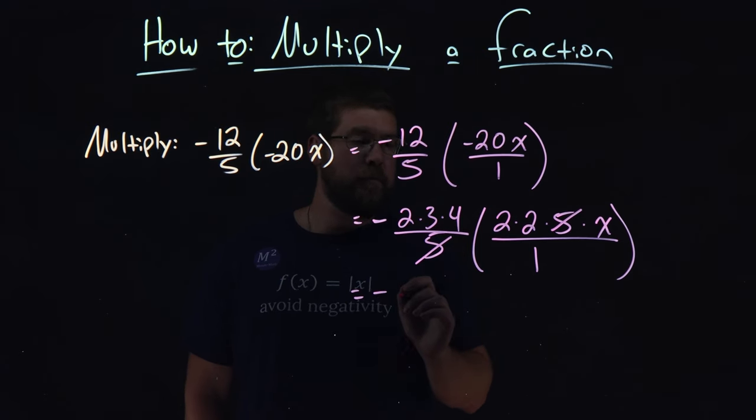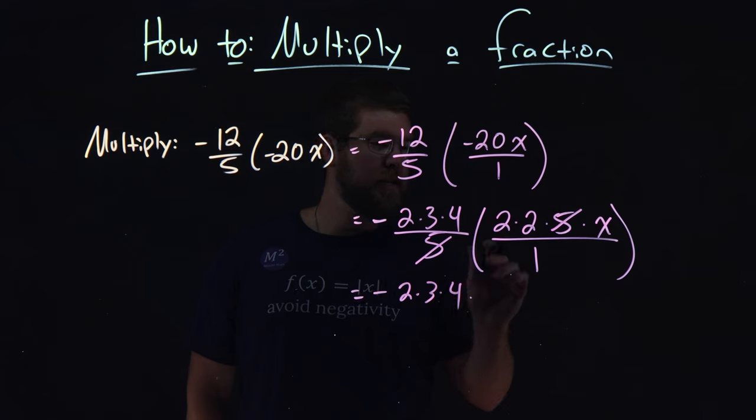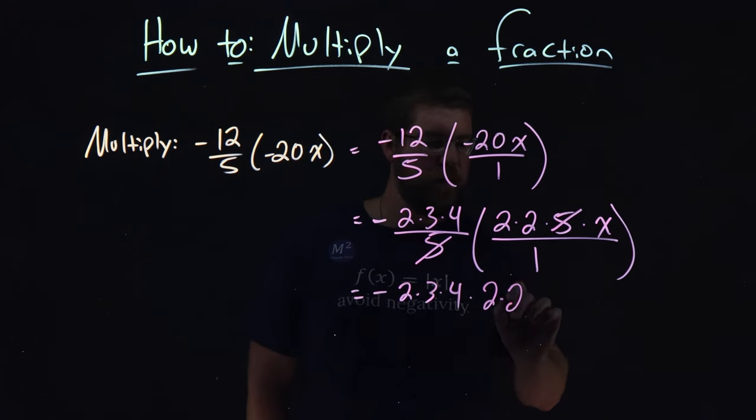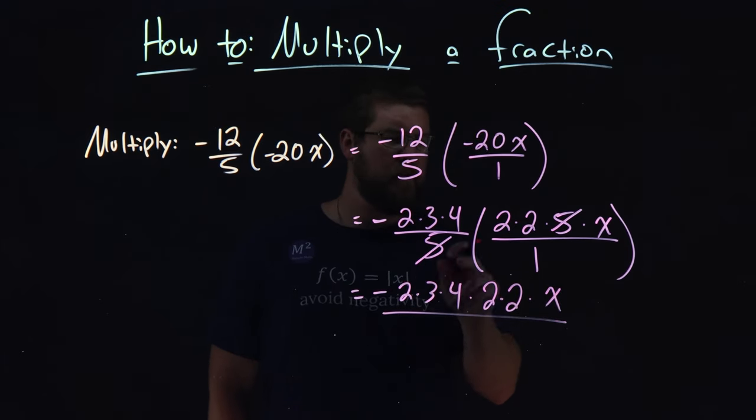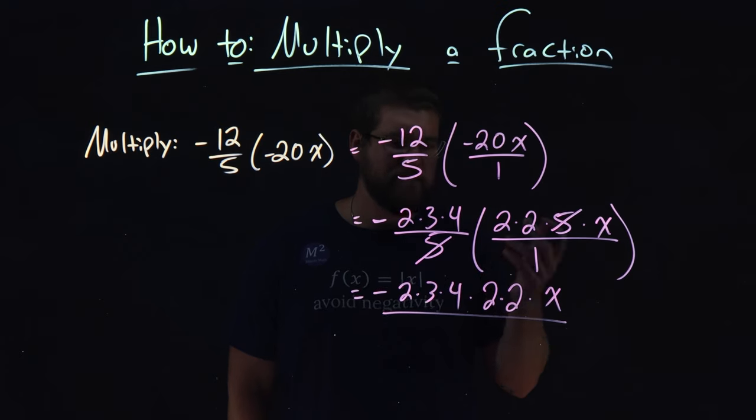A negative 2 times 3 times 4, so 2 times 3 times 4 in the numerator, times, we multiply across the numerator here, 2 times 2 times x, all over, this 5 was canceled out, so we just have 1 times 1, which is 1.